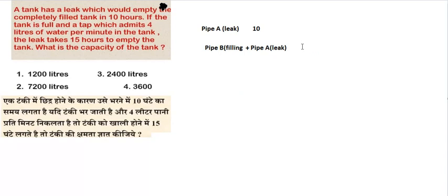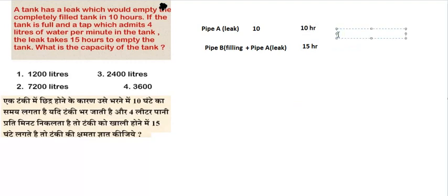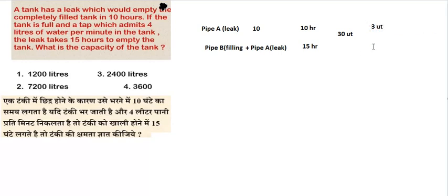Pipe A takes 10 hours and together they take 15 hours. If we take the LCM of 10 and 15, it will become 30 units. Using the ratio method, dividing 30 by 10 gives 3 units, and 30 by 15 gives 2 units per hour.